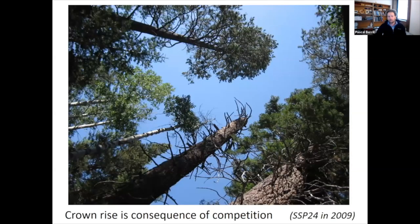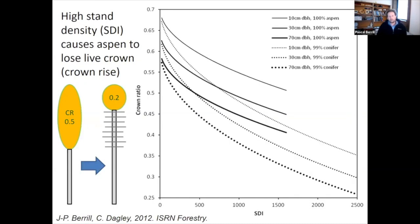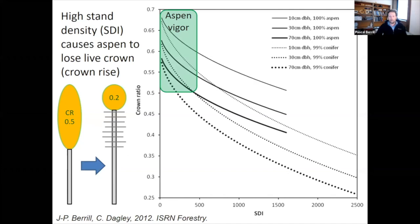This is the same South Shore stand. What we're looking at here is crown rise. With competition, crowns retreat — this tree has a very small crown and low vigor. This graph shows the effect of stand density on the x-axis and crown ratio of aspen. Over time with increasing stand density we see a drop-off in crown ratio, which is an indicator of vigor. The green zone of desired condition would be to get us back to high vigor with long green crowns.